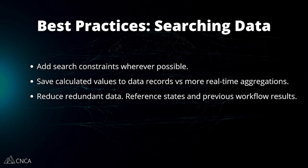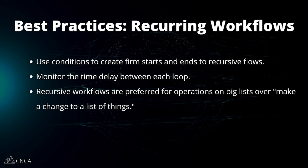For consolidating searches: Bubble is smart enough to perform one search if it sees multiple identical queries. However, leverage custom states and previous steps in a workflow to access data that has already been fetched wherever possible. The idea isn't to eliminate all high-cost activities, but simply to reduce them wherever possible. Regarding recurring workflows — this is the type that requires the most vigilance, because it's easy to create an accidental infinite loop in the backend environment or to have unnecessary workflows running every X number of seconds checking for updates. Use conditions to ensure you're only running these actions when necessary, and give workflows a clear beginning and end. A recursive workflow is preferred over making a change to a list of things when that list is over 100 items — it's just a more performant operation.